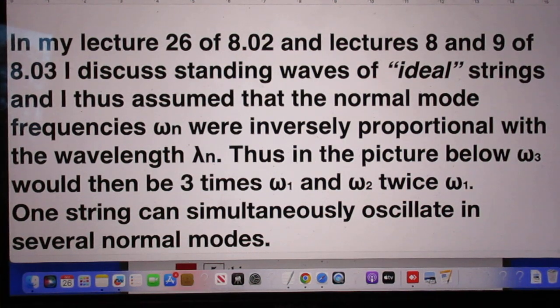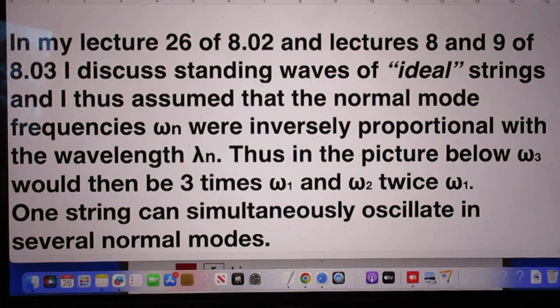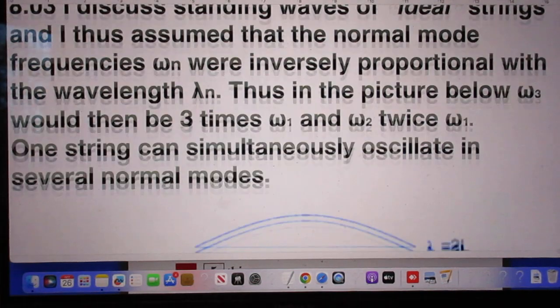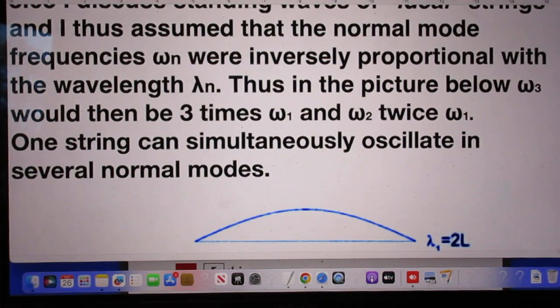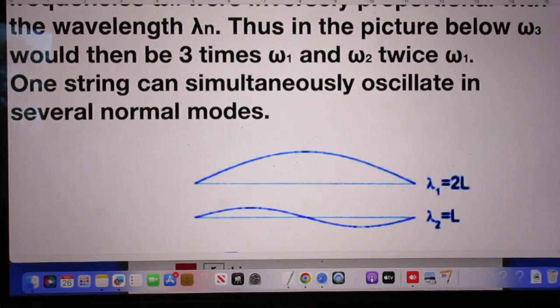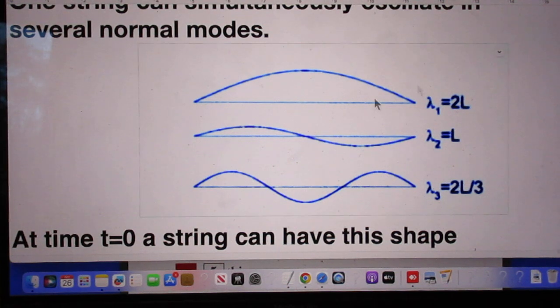In lecture 26 of 802 and lectures 8 and 9 of 803, I discussed standing waves of what I call an ideal string. I assumed that the normal mode frequencies, omega n, were inversely proportional with the wavelength lambda n. Thus in the picture below, omega 3 would be 3 times omega 1 and omega 2 would be twice omega 1.